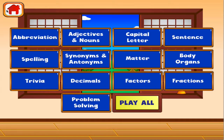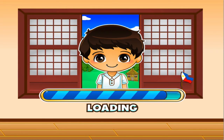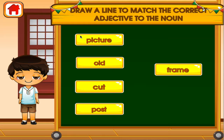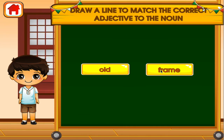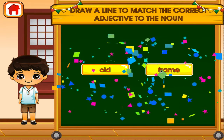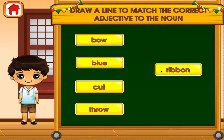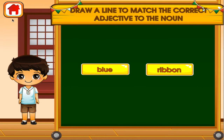Choose the activity you want to play. Adjectives and nouns. Marvelous! Good job! That's another right.